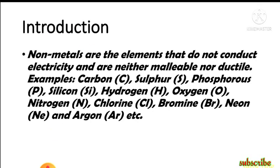Nonmetals are elements that do not conduct electricity and are neither malleable nor ductile. For example: carbon, sulfur, phosphorus, silicon, hydrogen, oxygen, nitrogen, chlorine, bromine, neon, argon, etc. In the chapter on the periodic table, we have seen that the maximum number of elements are metals. There are some nonmetals which are located in the p-block — group numbers 13, 14, 15, 16, 17, and 18.